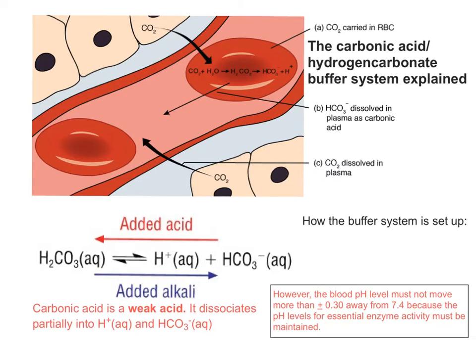It's vital that the blood pH level doesn't move more than 0.3 of a pH value away from 7.4. This is because the pH levels for essential enzyme activity in cells must be maintained. If this essential enzyme activity is compromised by the pH level moving too high or too low, those processes may shut down, and that could put a person in grave danger. So it's very important that the blood pH doesn't move away from 7.4, hence the function of the hydrogen carbonate carbonic acid buffer system.